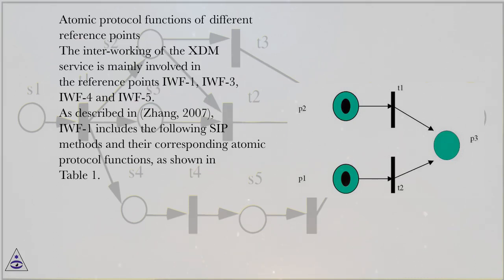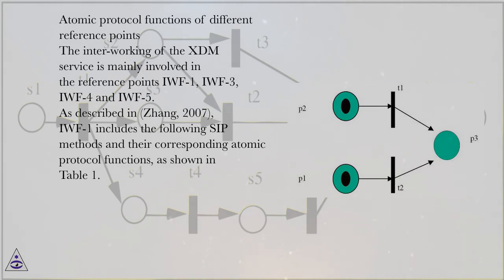Atomic Protocol Functions of Different Reference Points. The interworking of the XDM service is mainly involved in the reference points IWF1, IWF3, IWF4, and IWF5. As described in Zhang, 2007, IWF1 includes the following SIP methods and their corresponding atomic protocol functions, as shown in Table 1.